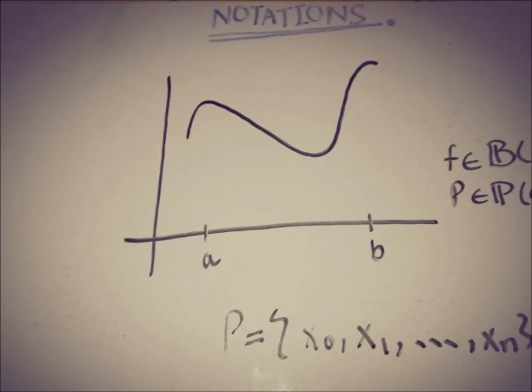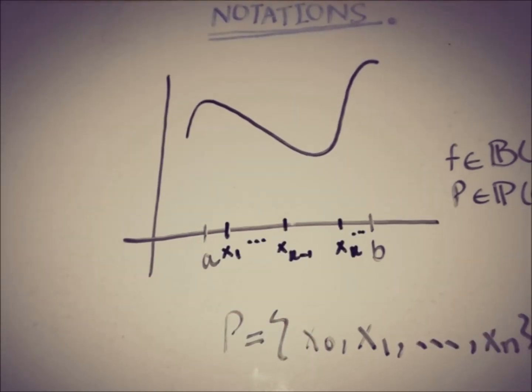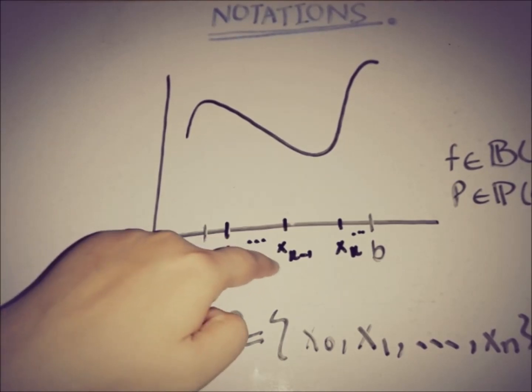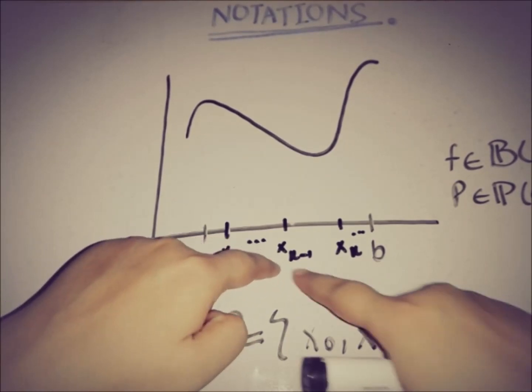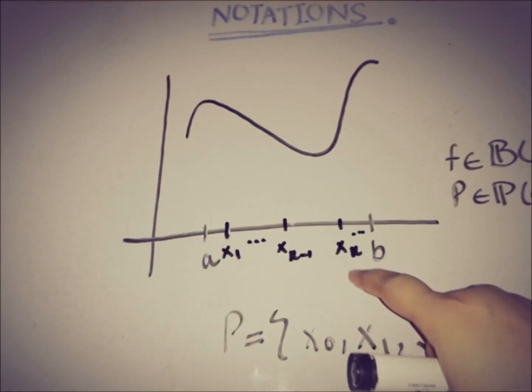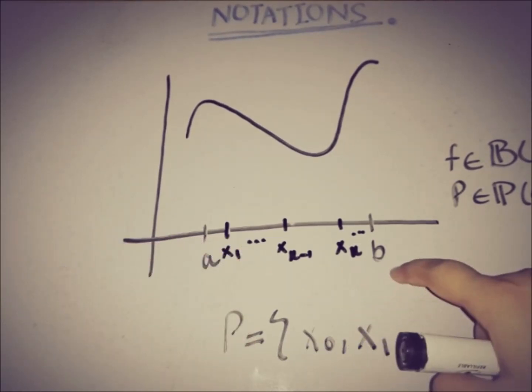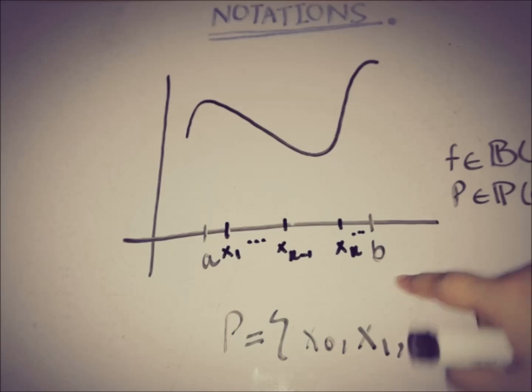P is equal to {x₀, x₁, ..., xₙ}, where x₀ = a and xₙ = b. So here is x₁, and so on — this is x_{k-1}, this is x_k, and so on to b.